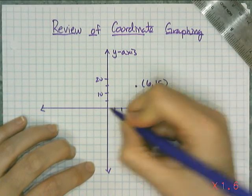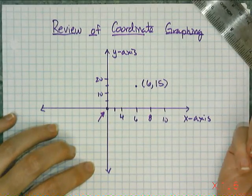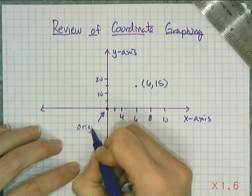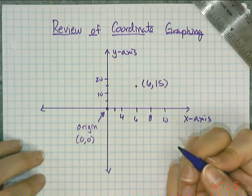Now we have some important points on this graph, or this coordinate axis, that point right there where the two axes intersect. This is called the origin. And the origin is kind of where everything begins. And it has an ordered pair, 0, 0.